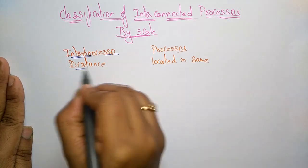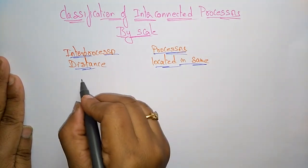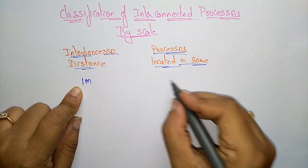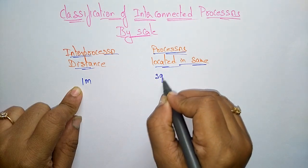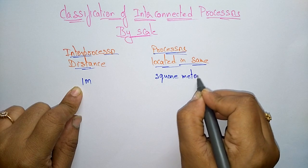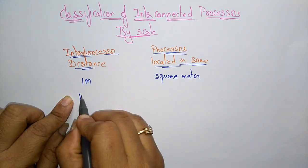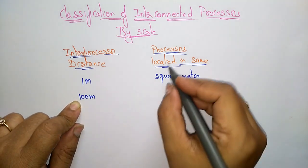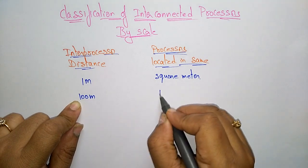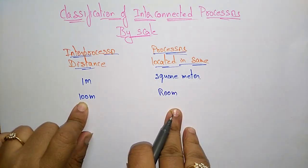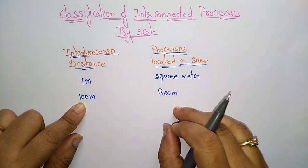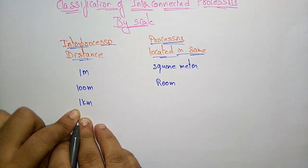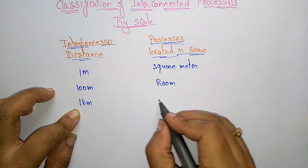Let us take this inter-processor distance and processor location. Suppose the inter-processor distance is 1 meter — the processor is located in the same square meter. If the inter-processor distance is 100 meters, the processor is located in the same room. And if the inter-processor distance is 1 kilometer, the processor has to be located within the building.